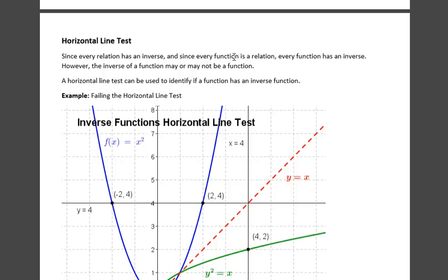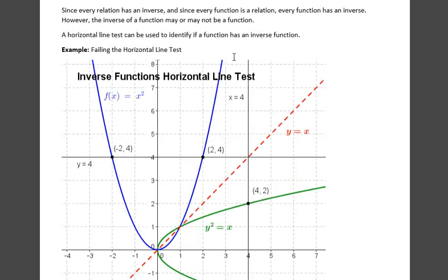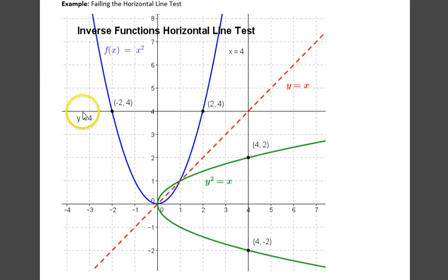A simple test called the horizontal line test can be used to identify if a function has an inverse function. Here's an example of the function f of x equals x squared in blue, and it fails the horizontal line test, because there are two points, negative 2, 4, and 2, 4, as you can see here,